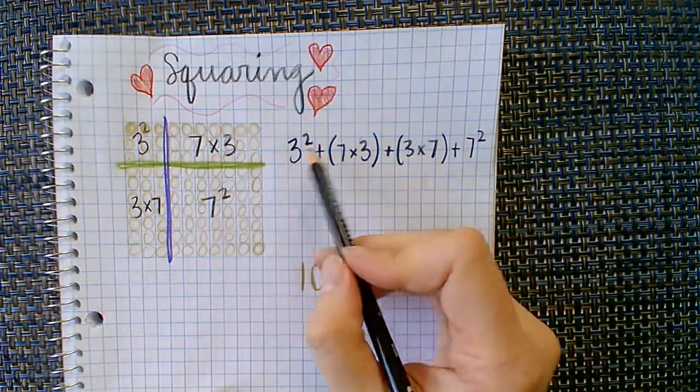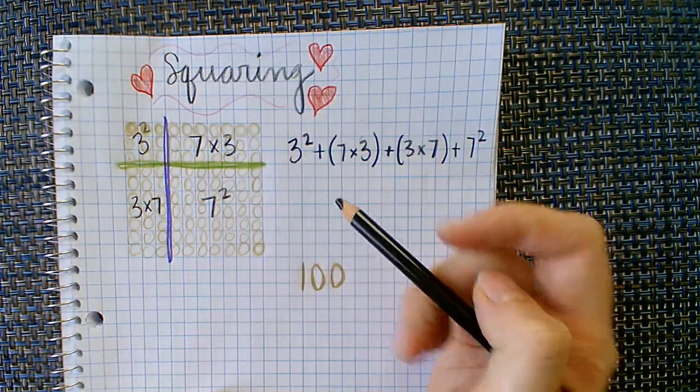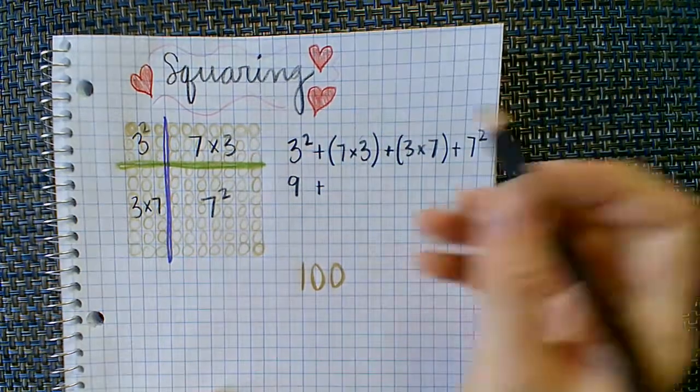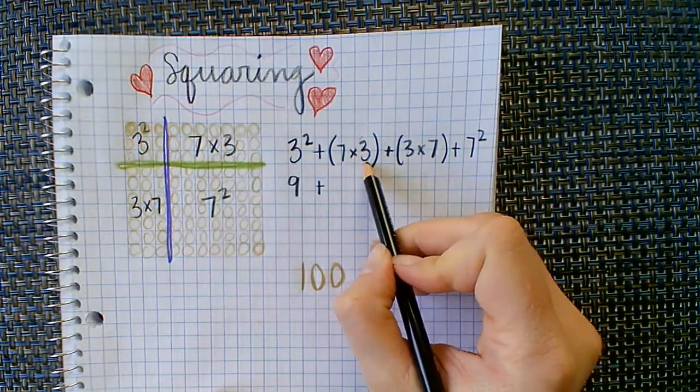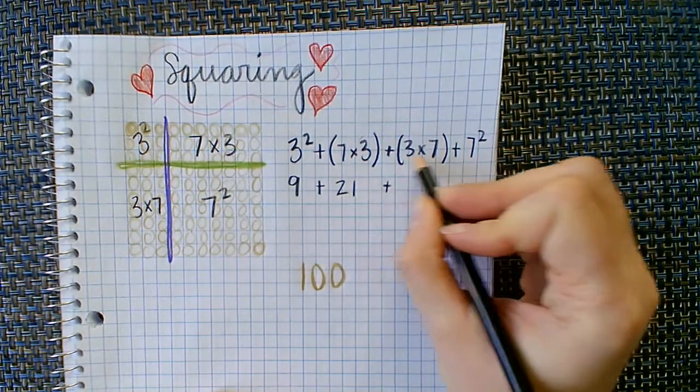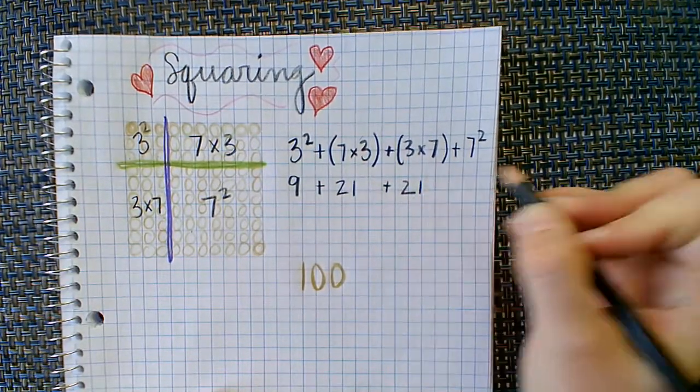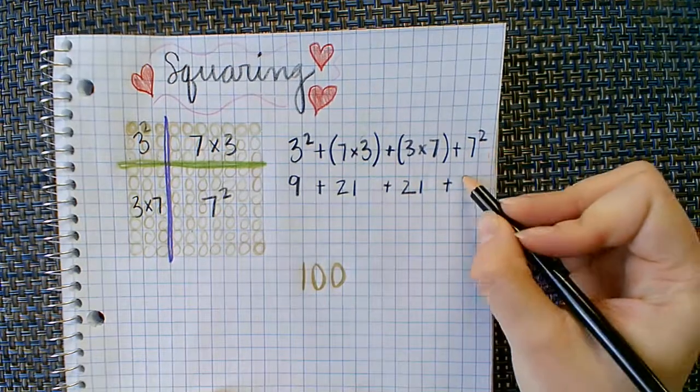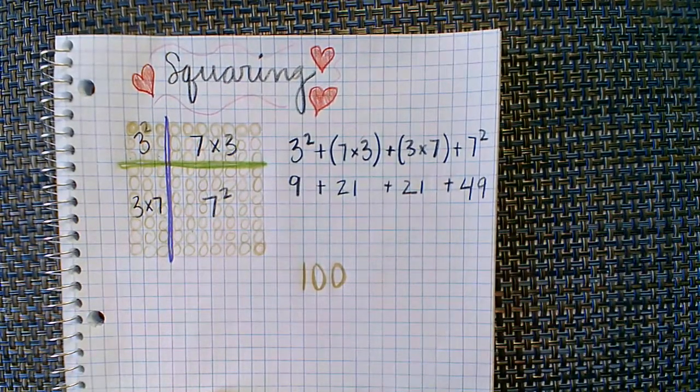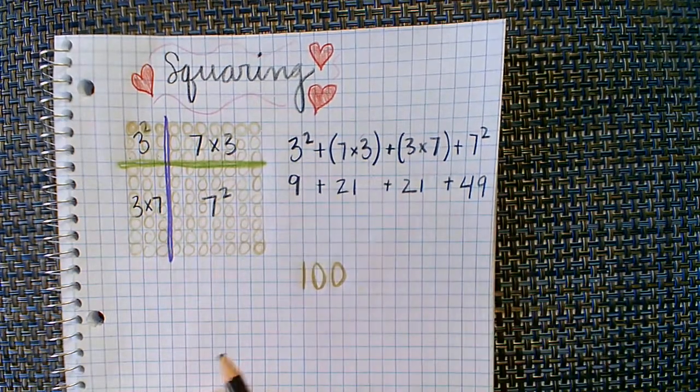Now, I know that three squared is equal to nine. And I know that seven times three is 21. I know that three times seven is 21. And seven squared is 49.